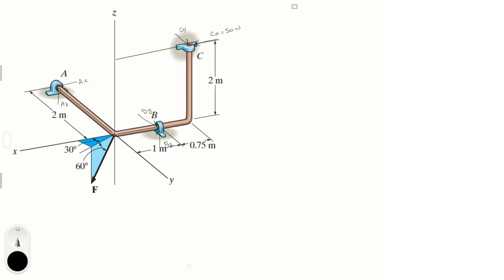The first thing we want to do is break F into its Cartesian components. Fx is equal to the magnitude of F times cosine of 60 times cosine of 30, because F cosine 60 gives the projected component, and then cosine 30 gives the x-component. That gives us 0.4330 F.